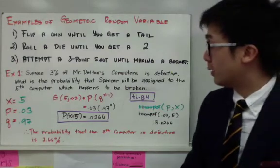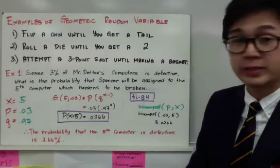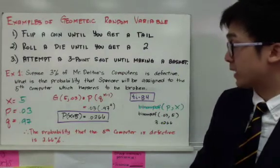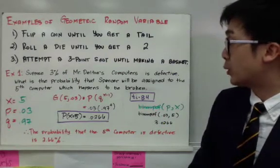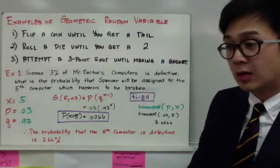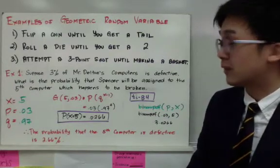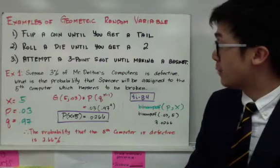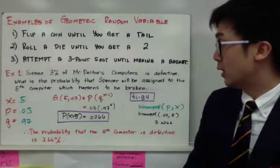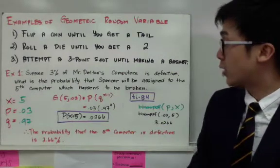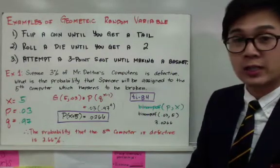To make it more understandable, we have example number 1. Suppose 3% of Mr. Delton's computers are defective. What is the probability that Spencer will be assigned to the 5th computer which happens to be broken? So there are computers at Mr. Delton's school and 3% of them don't work. What is the probability that Spencer will be assigned to the fifth computer that doesn't work? Just like we did in our previous lesson on binomial, we need to organize the givens.